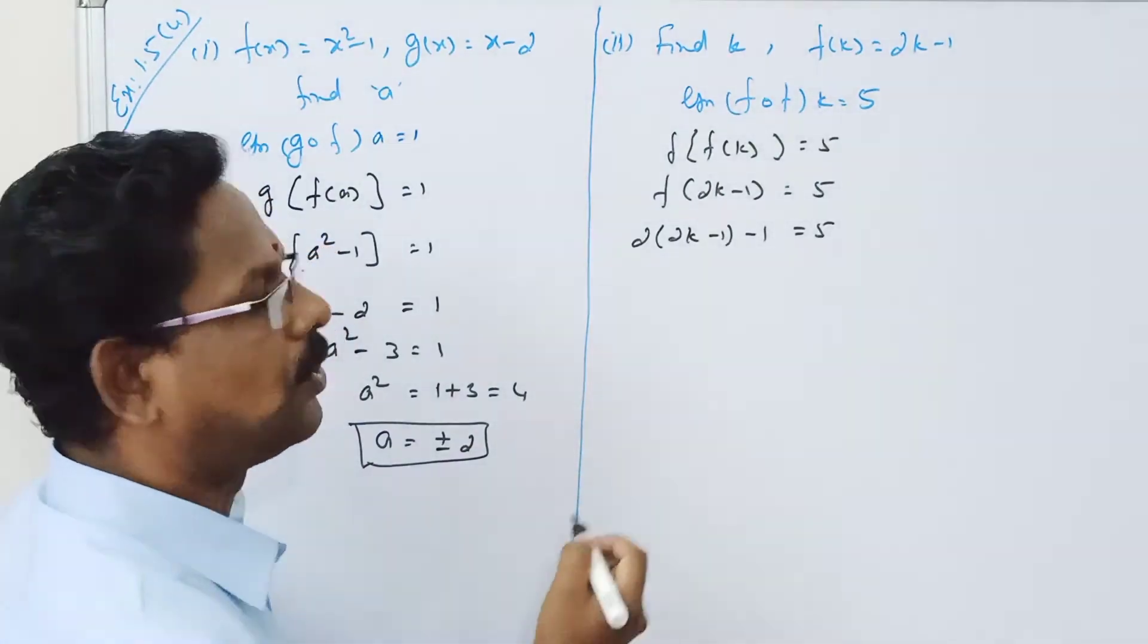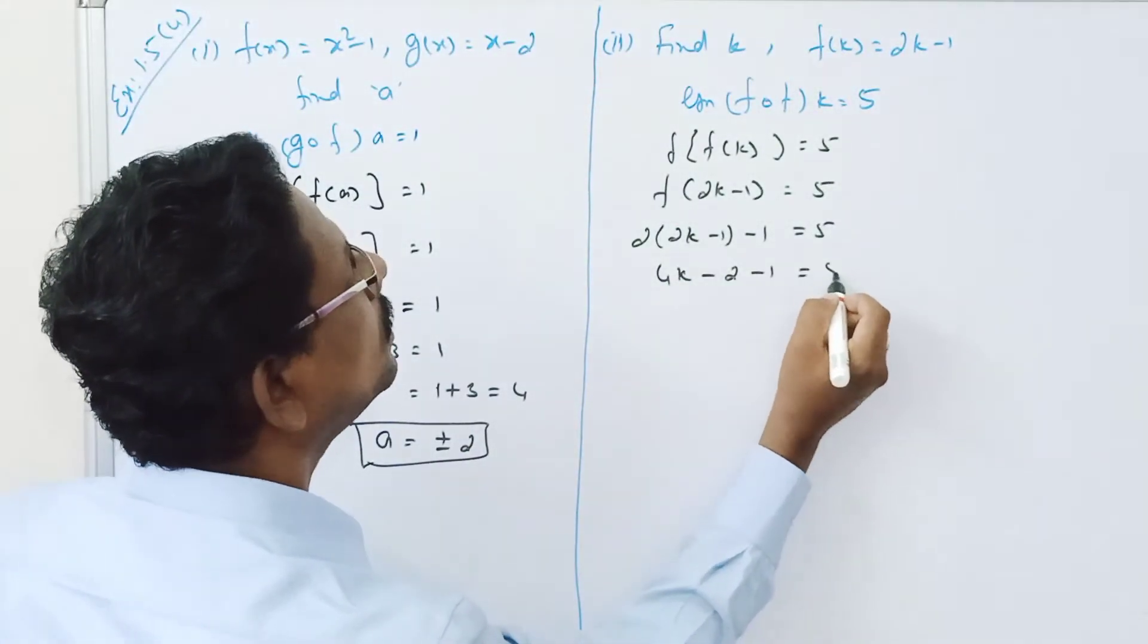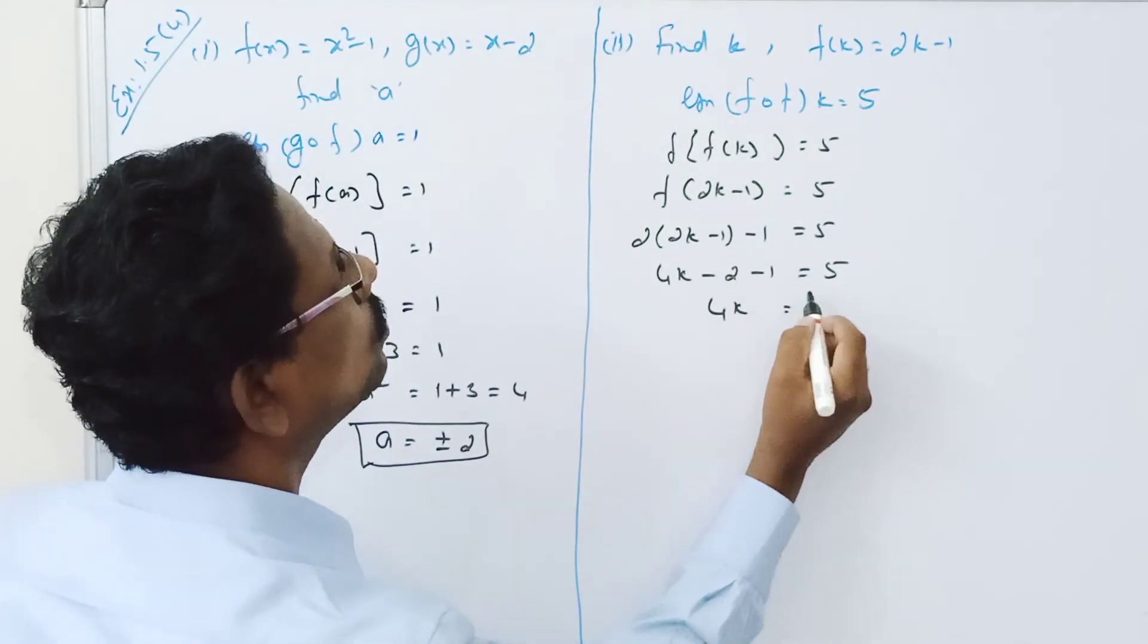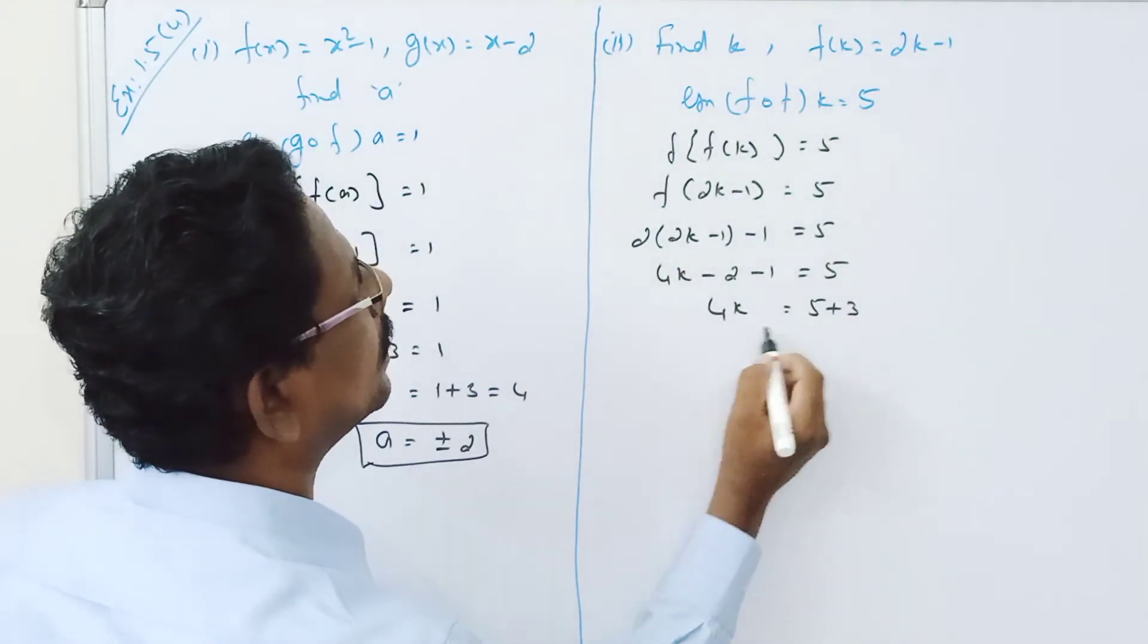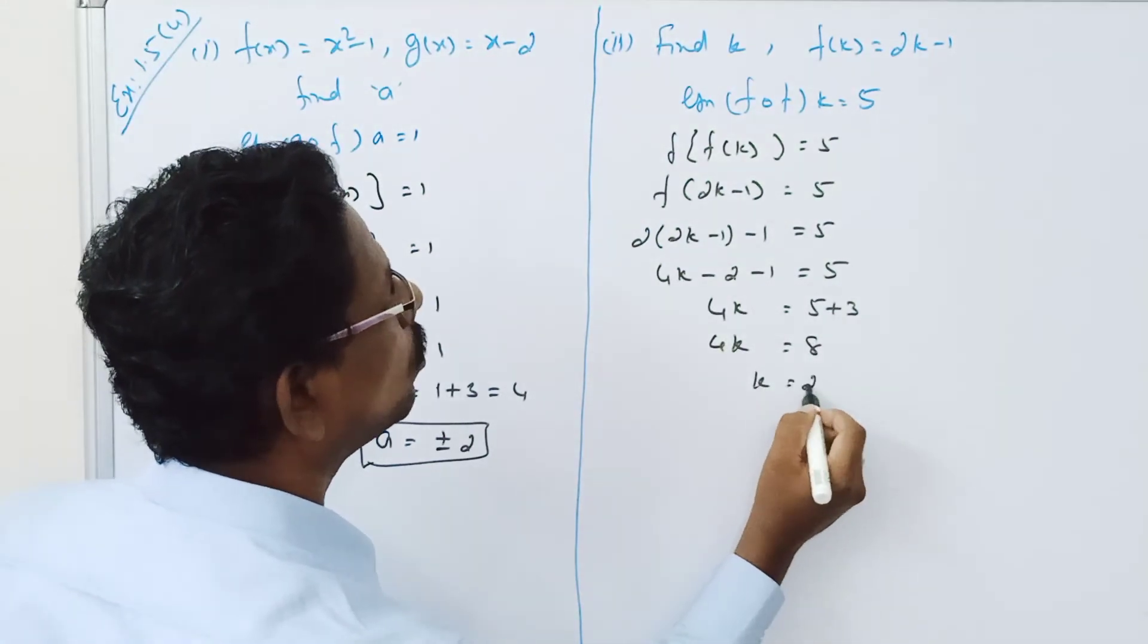That is 4k minus 2 minus 1 equal to 5, so 4k equal to 5 plus 3, 4k equal to 8, k equal to 2.